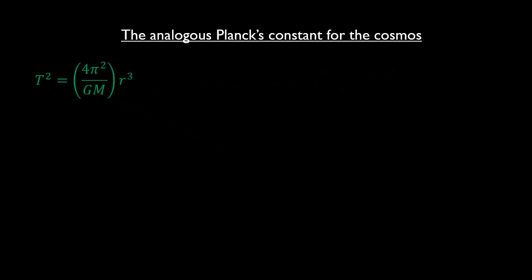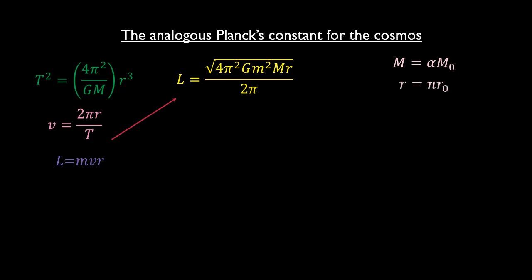Subbing these and the equation of linear velocity into the momentum equation yields the following equation. Just like we did in the case of an electron, we let the mass of the star to be equal to a whole number multiple, α, of a fundamental mass, M0. Also, we let the radius to be equal to an integer multiple of a fundamental radius, R0. And putting these into the yellow expression and factoring out α and n yields the following green equation.